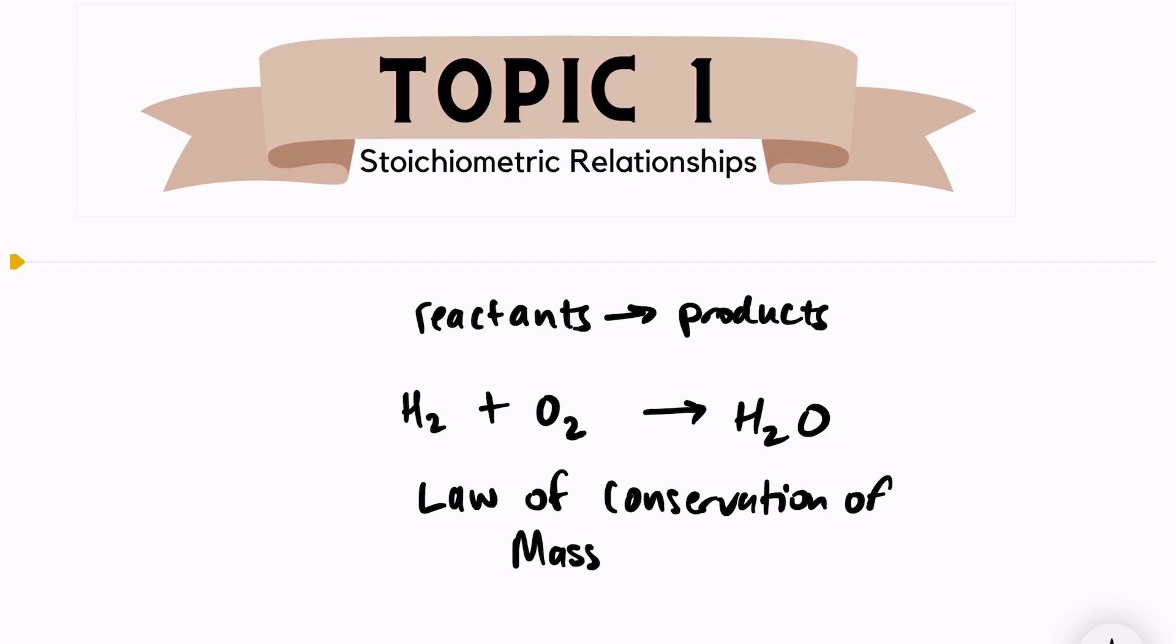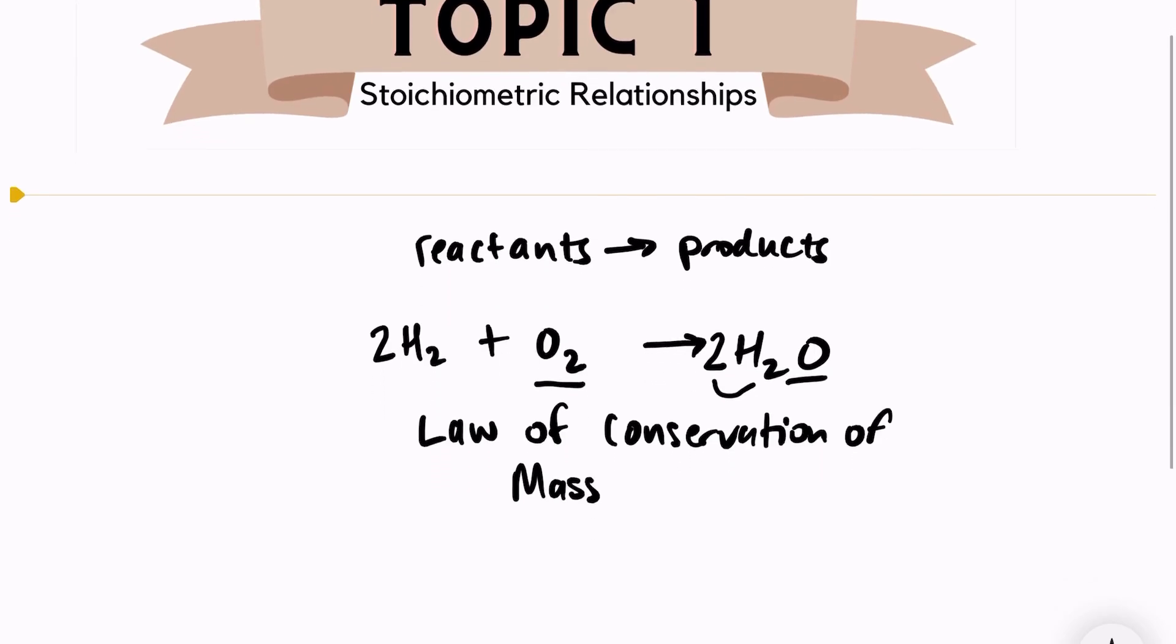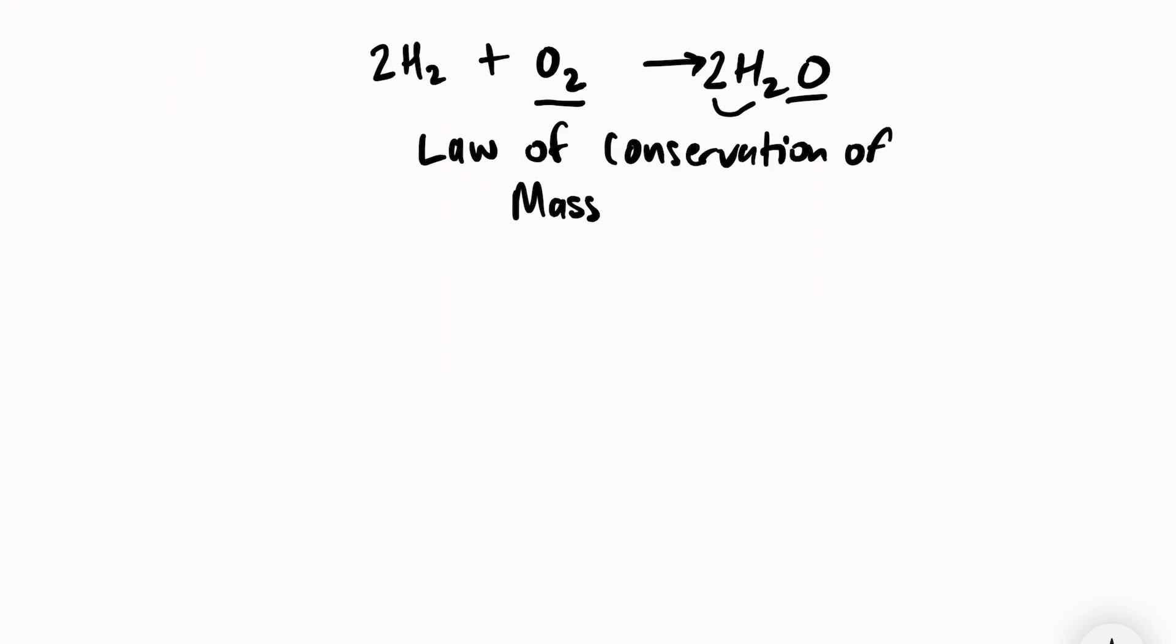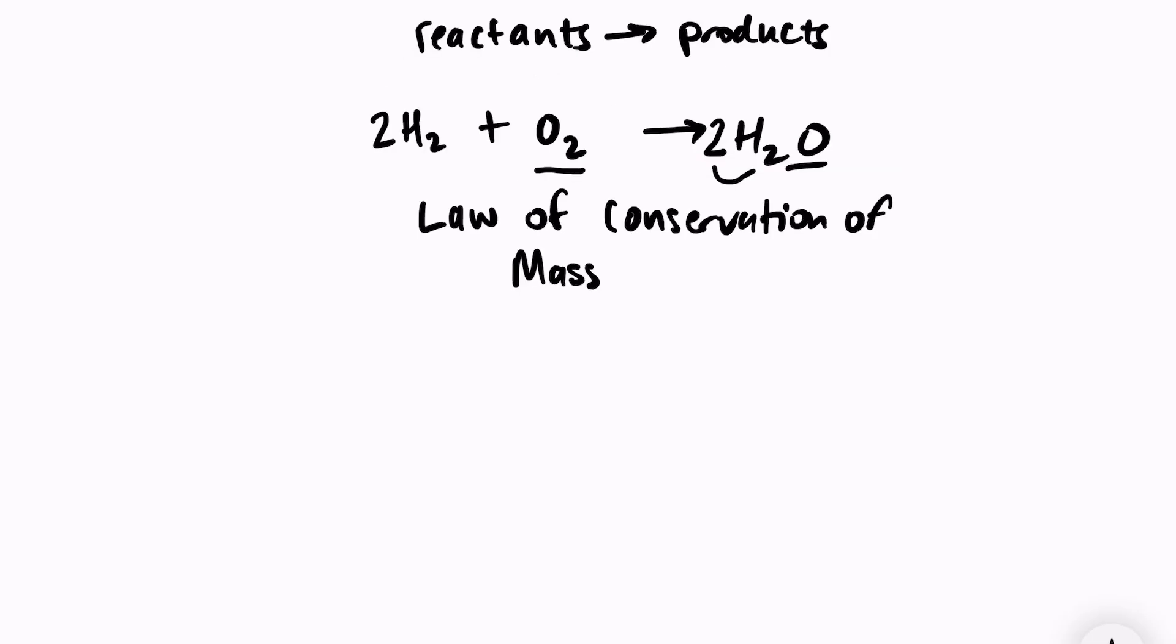we need to balance any chemical equation. Count the atoms on either side and make sure they add up. If I look at oxygen, I have two on this side, one on this side, so I put a coefficient of two here. That balances the oxygens, but two times two is four, so I have four hydrogens on the right and need four on the left, so I put a coefficient of two. Again, we balance equations because of the law of conservation of mass.